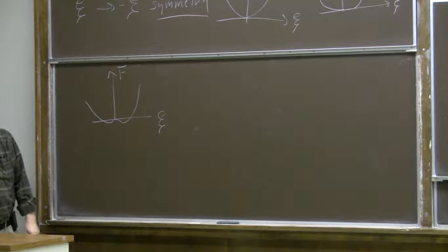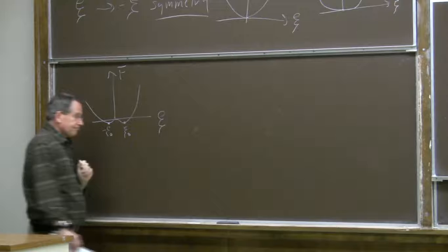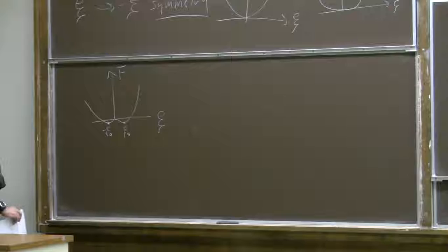The minimum of the free energy occurs at two non-zero values. So in the low-temperature phase, the order parameter has a non-zero value. You can think of that as like the spontaneous magnetization in the magnetic model.